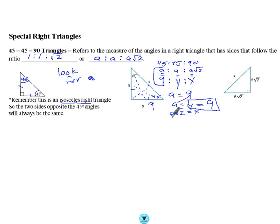X equals a square root of 2. If we know a is 9, then x equals 9 square root of 2. We don't need a decimal. We're going to just leave that in simplest radical form. That's something you'll want to practice for algebra 2.